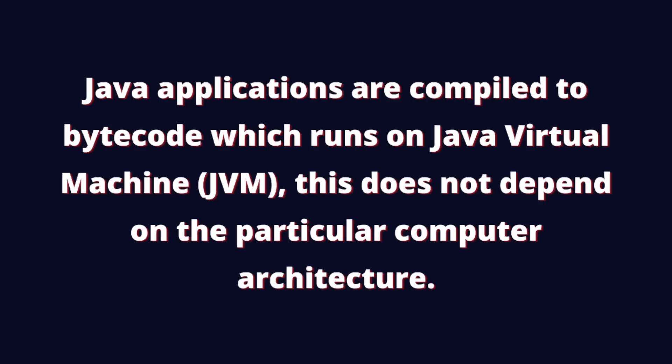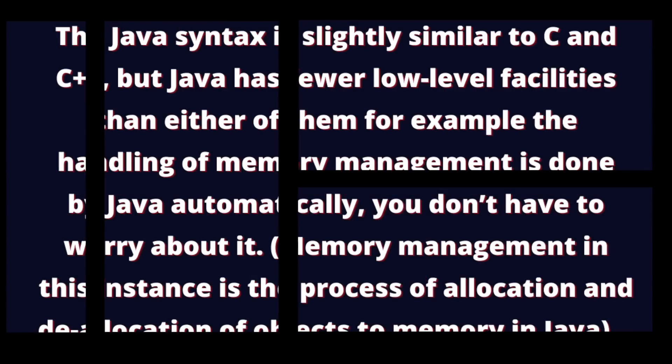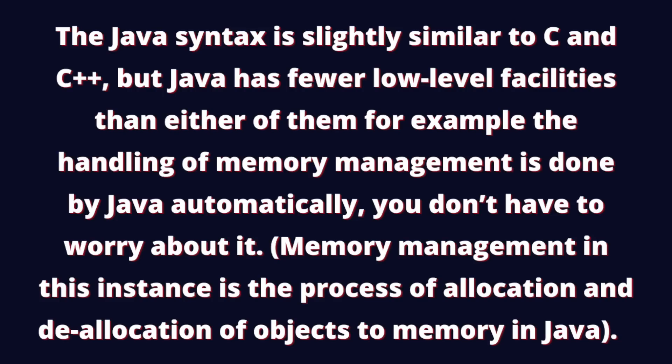Java applications are compiled to bytecode which runs on the Java Virtual Machine, JVM. This does not depend on the particular computer architecture. The Java syntax is slightly similar to the syntax of the C and C++ programming languages, but Java has fewer low-level facilities than either C or C++. For example, the handling of memory management in Java is a process that is done automatically, so you don't have to worry about it. But in C++, you have to take care of those manually by yourself.